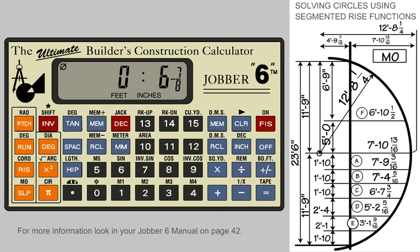If we need to find only one dimension like the F dimension in this diagram, which is 5 feet over from the center line, the simplest way is first to clear the display. Enter a new default spacing. In this case, it is 5 feet. Press the space key. Activate the segmented rise function again by pressing the invert key and the segmented rise function key.